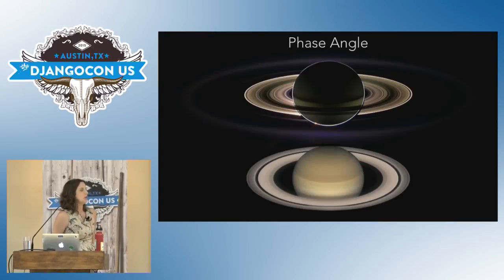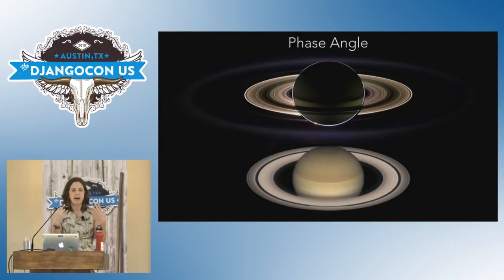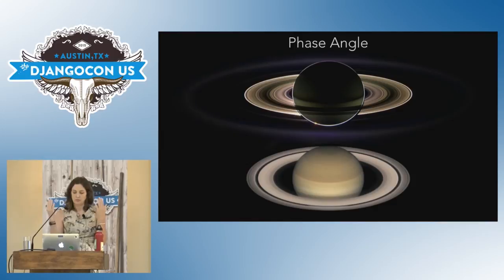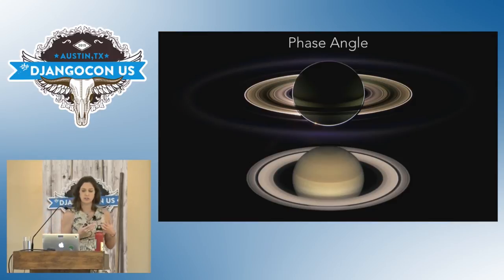Phase angle is just a way of quantifying the angle of light in a photograph. If you're taking a picture and the light is coming from behind you, that is a low phase angle. If the light is coming from in front of you so that the thing you're taking a picture of is backlit, that is high phase angle. Here you see two pictures of Saturn. The top image is at high phase angle — Saturn is backlit. The bottom image is a low phase angle image where the light is coming from behind the camera. As you can see, the rings look very, very different at different lighting angles, and this research allows people to learn a lot more about the rings by looking at them at different lighting angles.